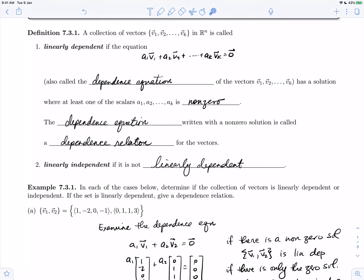Let's revisit that definition quickly now. A collection of vectors v1 through vk in Rn is called linearly dependent if the dependence equation has non-zero solutions. Remember that the coefficients are the unknowns of this equation. A writing of the dependence equation with non-zero coefficients is called a dependence relation for the vectors. The collection of vectors is called linearly independent if it is not linearly dependent.